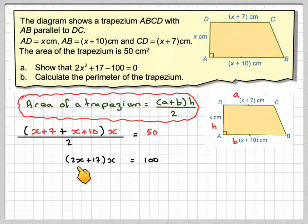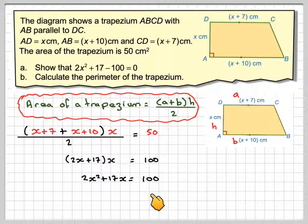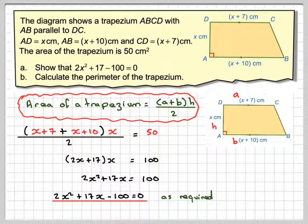Expanding this bracket, we have 2X times X, which gives 2X squared, and 17 times X, which gives 17X, equal to 100. Subtracting 100 from both sides, we get 2X squared plus 17X minus 100 is equal to 0, as required.